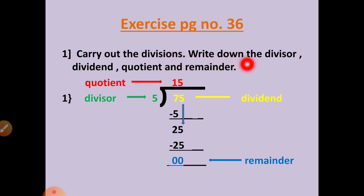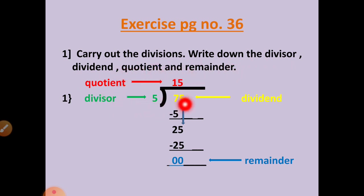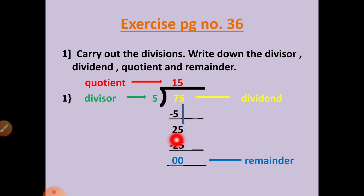Write down the divisor, dividend, quotient, and remainder. First we will solve the division question and then we will write the divisor, dividend, quotient, and remainder.